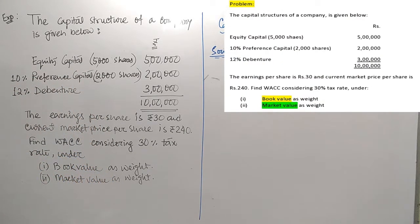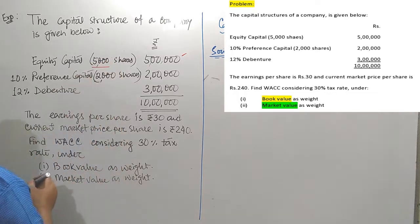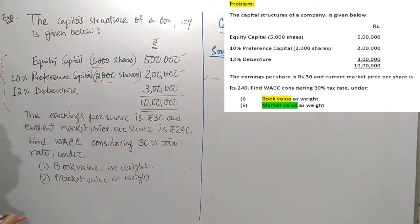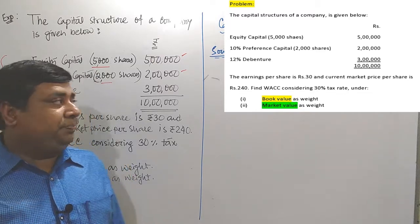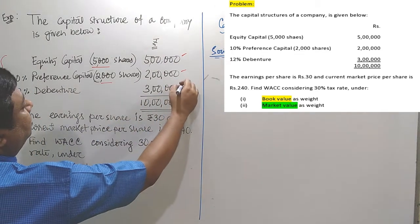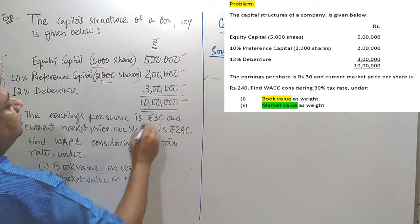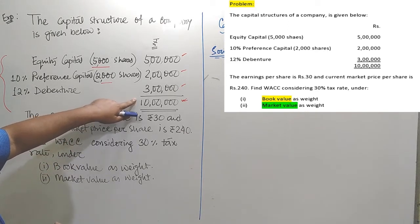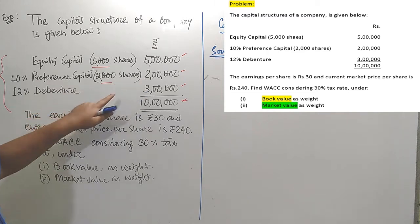The capital structure of a company is given to you. Equity share capital is 50,000 rupees and the total number of equity shares is 5,000. There is 10% preference capital of 20,000 rupees with a total of 2,000 preference shares. The book value for both equity and preference shares is rupees 100. 12% debenture is available, amounting to 3 lakh rupees. The equity capital is 5 lakhs, preference capital is 2 lakhs, and debenture is 3 lakhs.